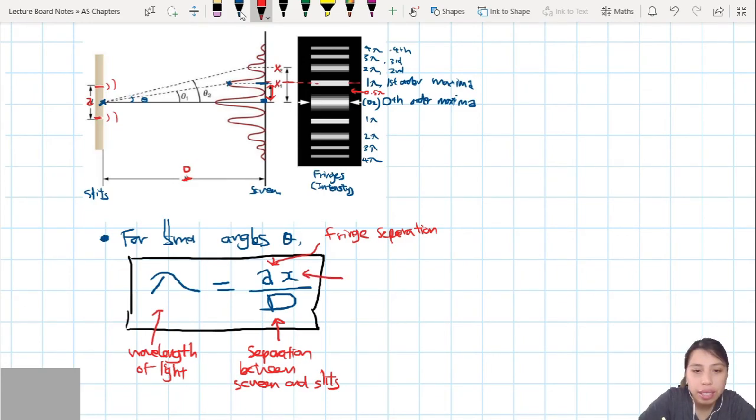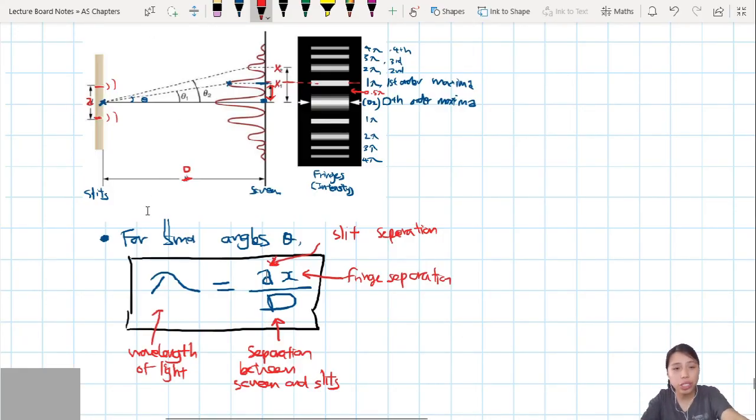And of course, lastly, the very important one. X. Sometimes you will see textbooks use Y. X or Y, it's just distance between the bright fringes. Also known as, oh, fringe. Why did I write fringe separation up there? My bad. Sorry about that. This one is fringe separation. This one on top is slit separation. That's correct. Okay. So that's the whole idea of this topic. You need to know how to use this equation.